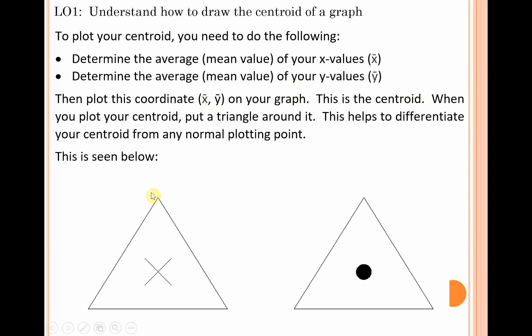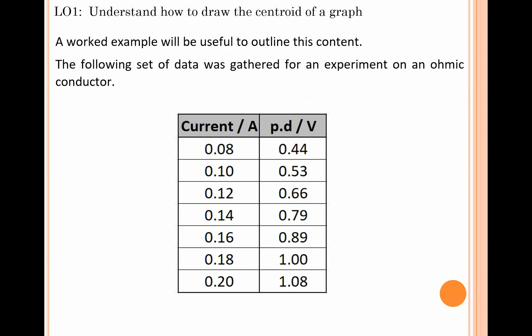This helps to differentiate your centroid from any normal plotting point you might see on your graph. If this X or this dot has a triangle around them, it helps make it very easy to see which is your centroid and what are your normal plotting points.